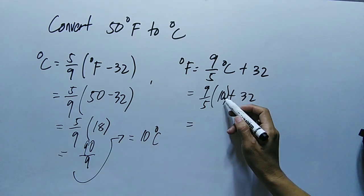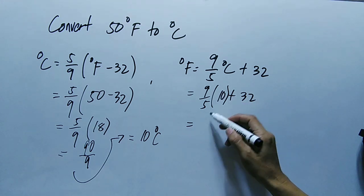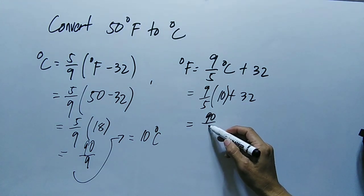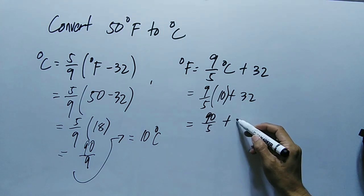Then equals 9 times 10, that is 90, divided by 5 plus 32.